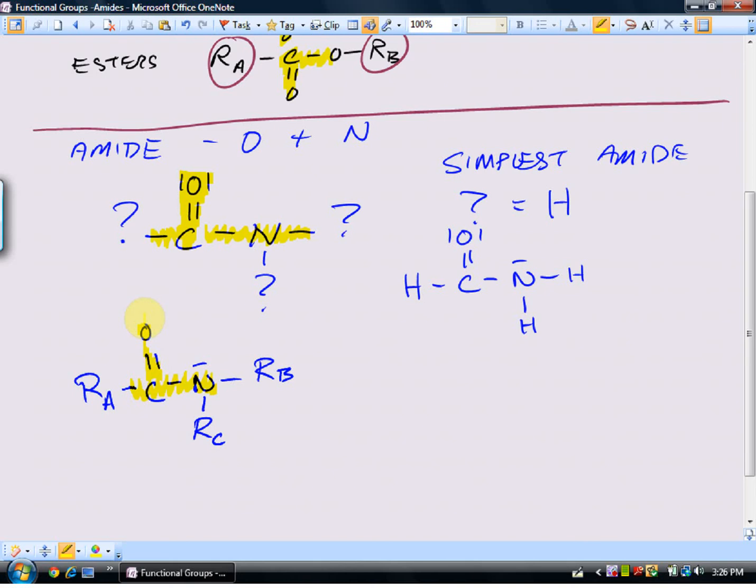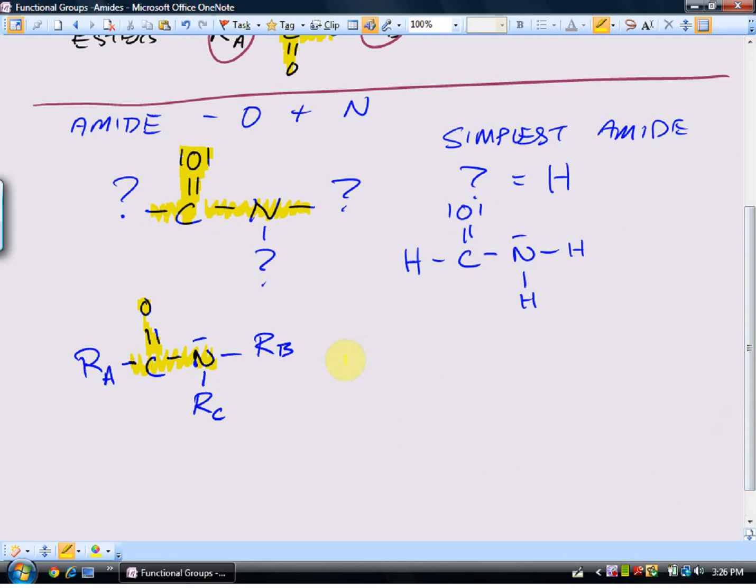Amides are very important because amides are the links between proteins and amino acids and proteins. So the amide bond is a very important bond in biological chemistry.